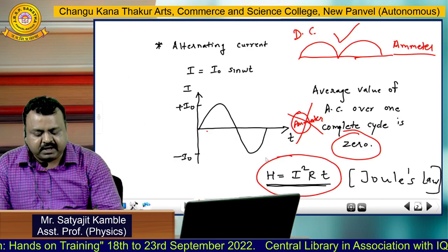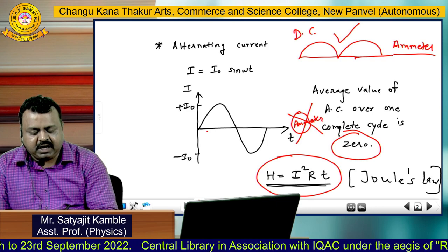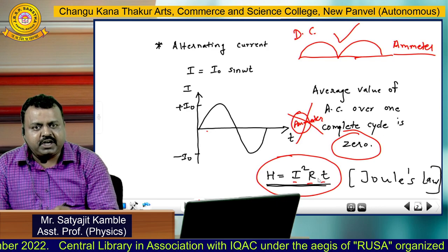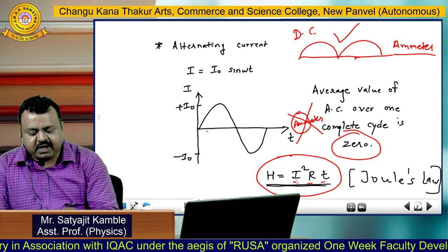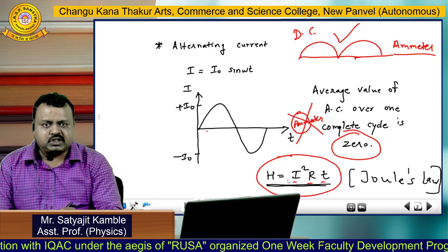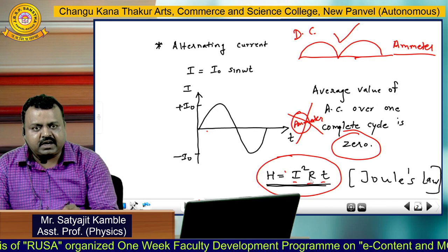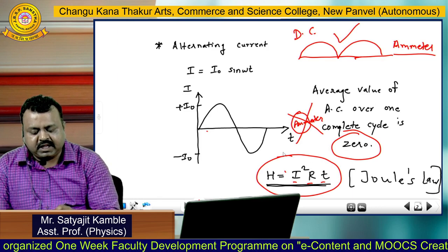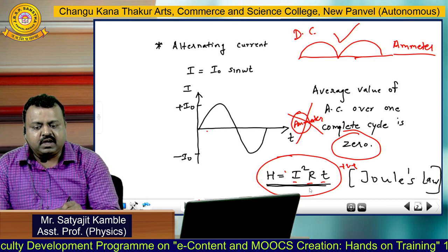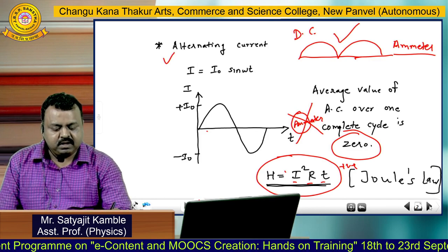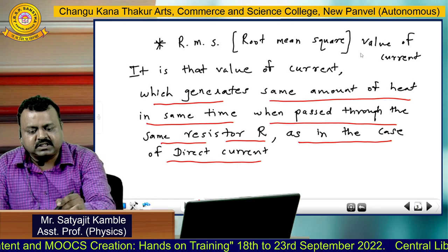Joule's law: in the heating effect, we have H equal to I squared R T. It means if we pass current I through a resistance R for time T, then the quantity of heat generated in that resistance is I²RT. In this case, we have the component I squared, and as you know, the square of any value is always going to be positive. That means if we pass alternating current through the resistance R, then using heating effect — Joule's law — the quantity of heat is always going to be a positive value. So we can use this property of heating effect for the measurement of alternating current.